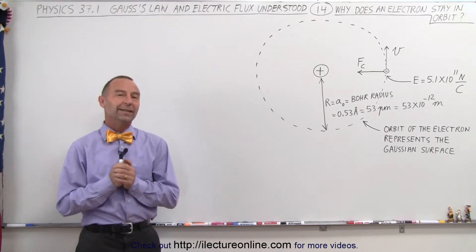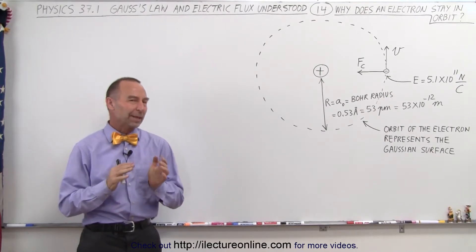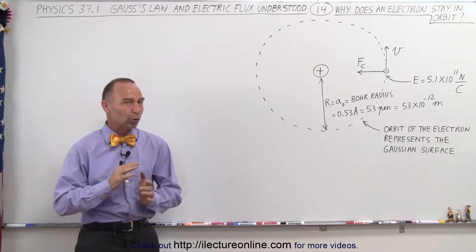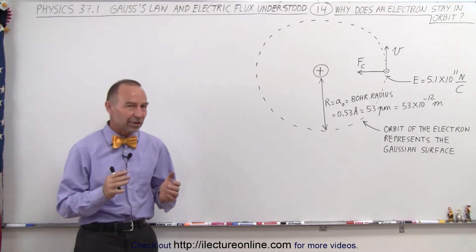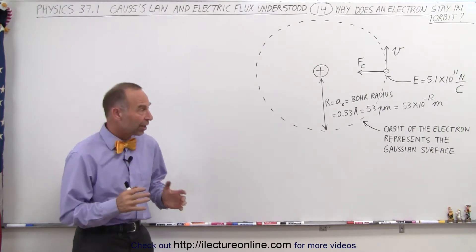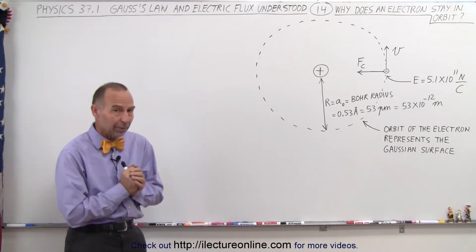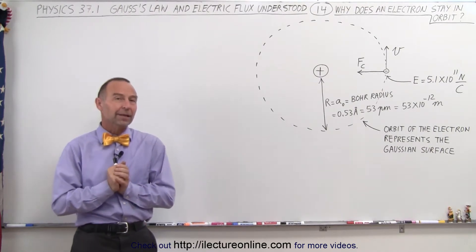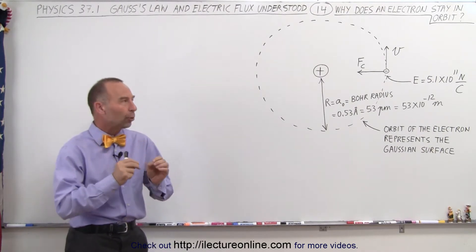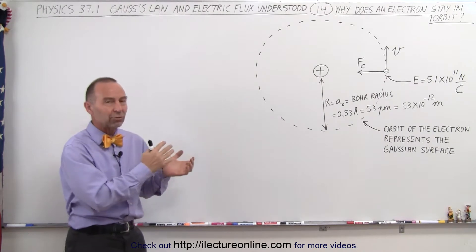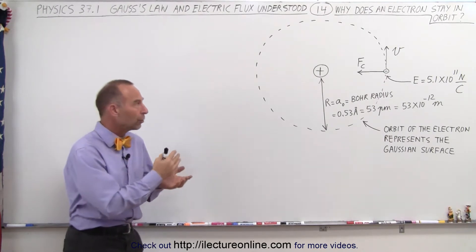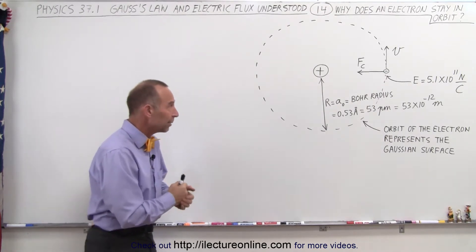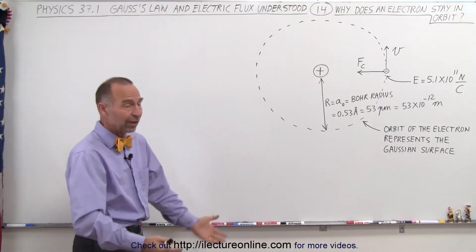Welcome to ElectronLine. Now that we're beginning to understand Coulomb's law, the electric field, and Gauss's law a little bit better, let's explore why an electron stays in orbit around the nucleus of an atom in a hydrogen atom.